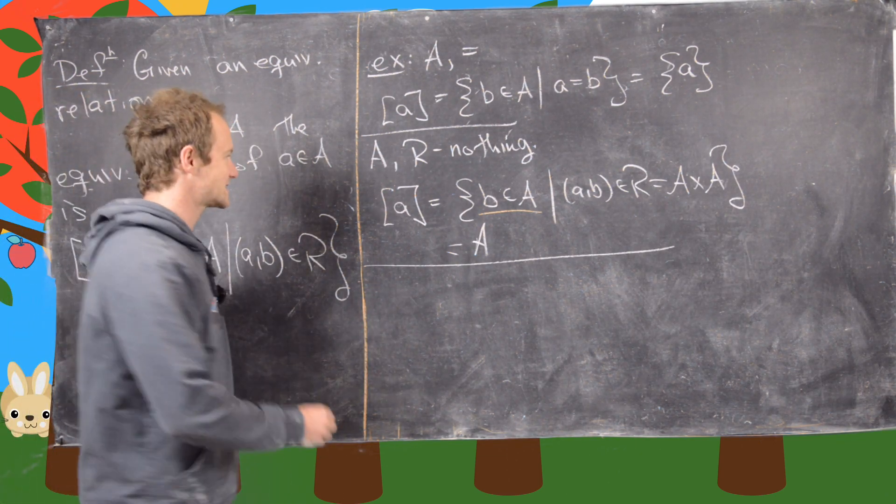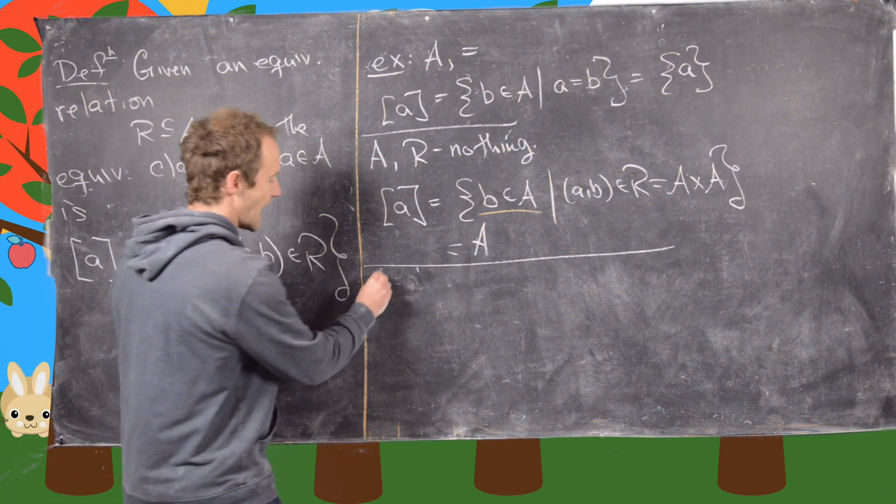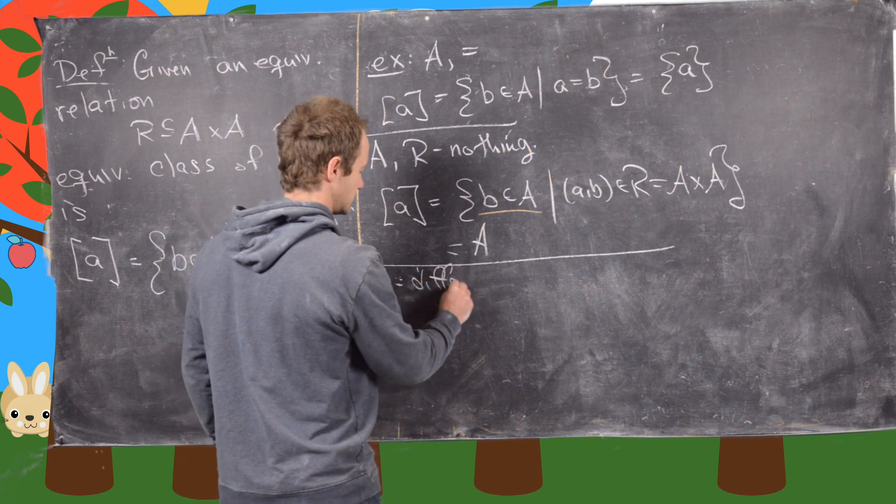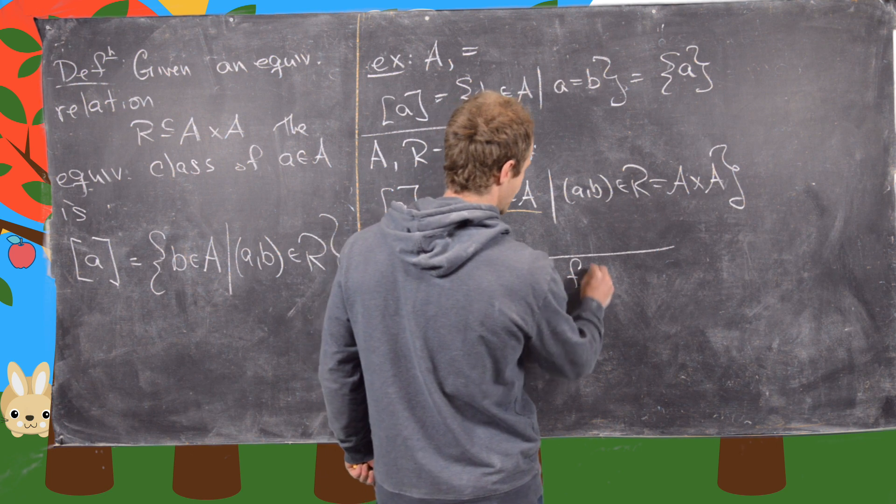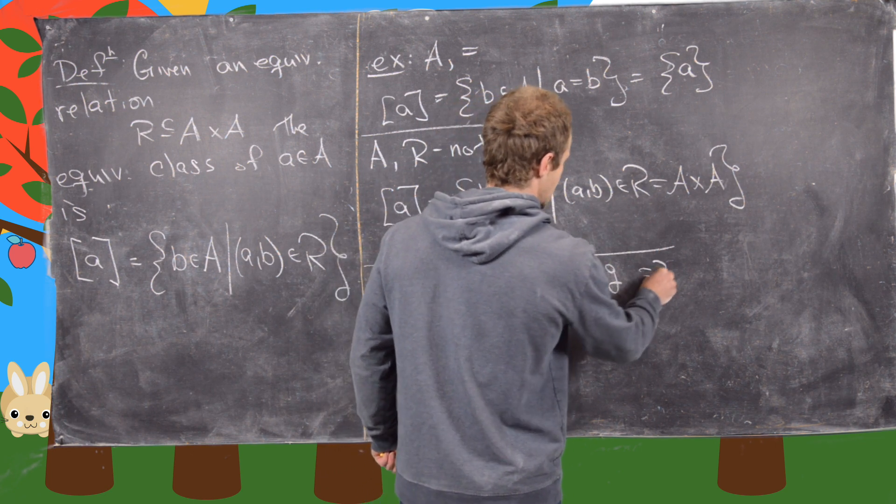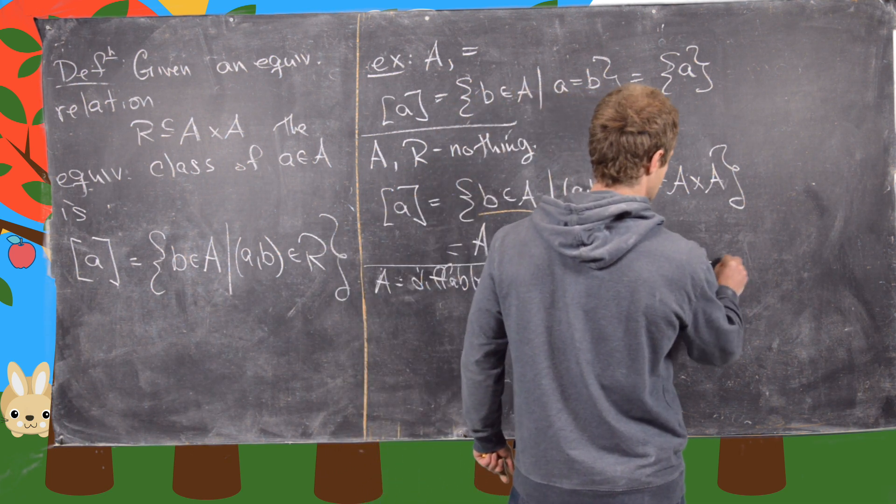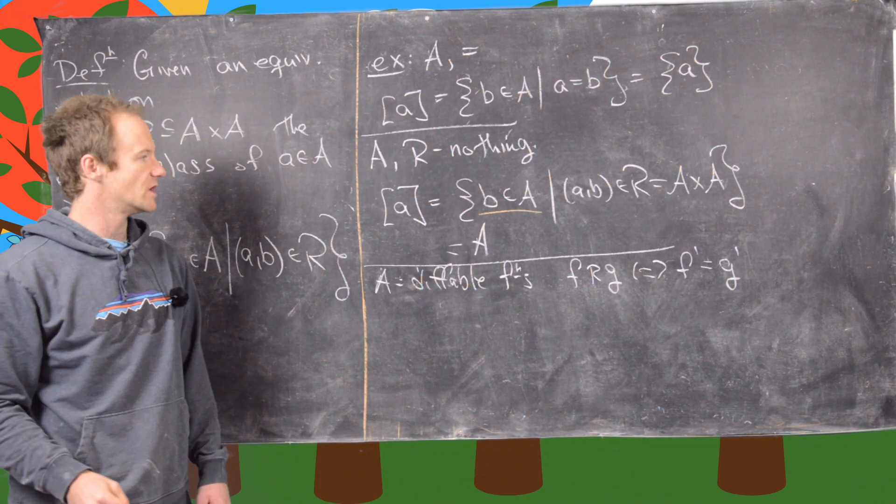So now we'll look at that last example. So let's take A to be differentiable functions. And let's say that F is related to G if and only if F prime is equal to G prime. Good.